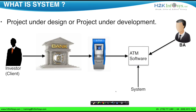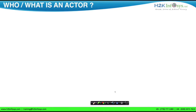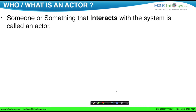Now that we have a good understanding of system, let's move on to actor. Who is an actor? The definition goes: someone or something that interacts with the system is called an actor. If we dissect the definition, the word interact is very important — it sounds like a condition that must be met to call something an actor.